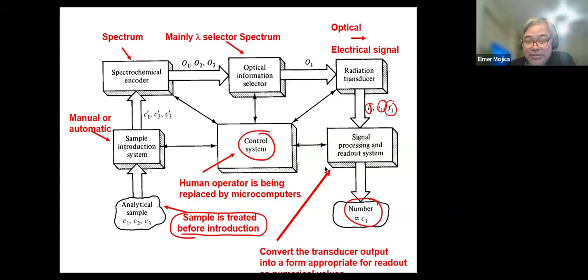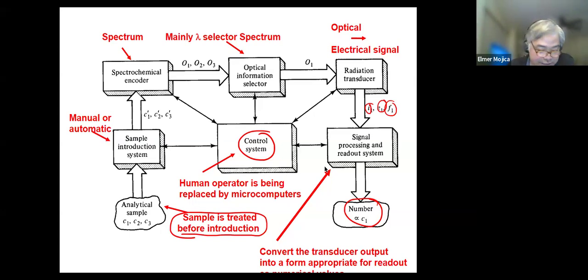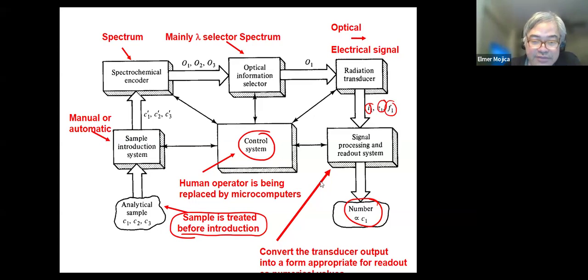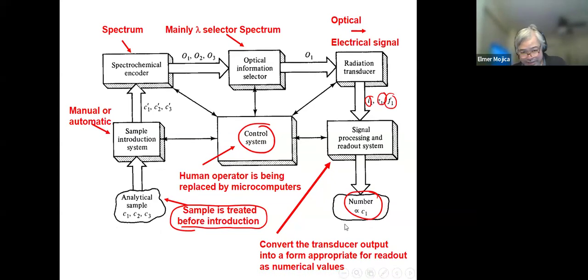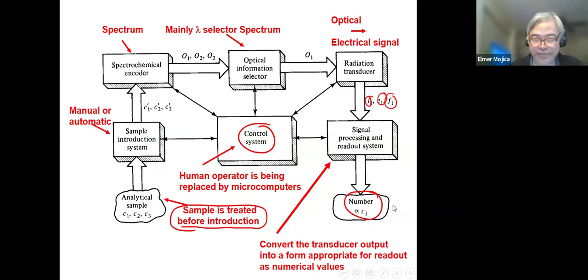Your electrical signal can be frequency, current, or electron volts. From that, it is processed and read out as a number — that's what we need: how the concentration can be translated into a number.